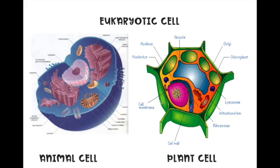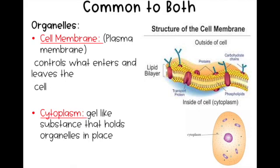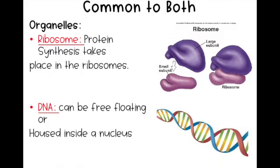Even though prokaryotic cells and eukaryotic cells are very different, they do share some things in common. For example, they all have a cell membrane, which acts like the door to a cell, controlling what enters and exits. They also all have cytoplasm — the gel-like goo inside the cell that holds everything in place. They're also all going to have ribosomes, which is where protein synthesis takes place, and that will become really important in a future unit. Lastly, they all have DNA. In prokaryotic cells, that DNA floats around in the cytoplasm, but in eukaryotic cells it's housed inside the nucleus. Either way, all cells have some system for passing down and storing hereditary information.